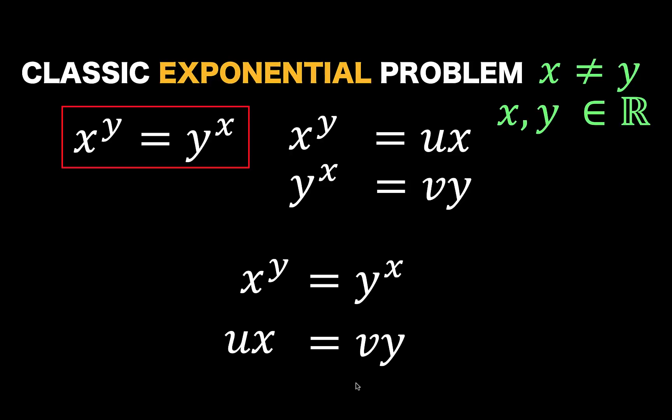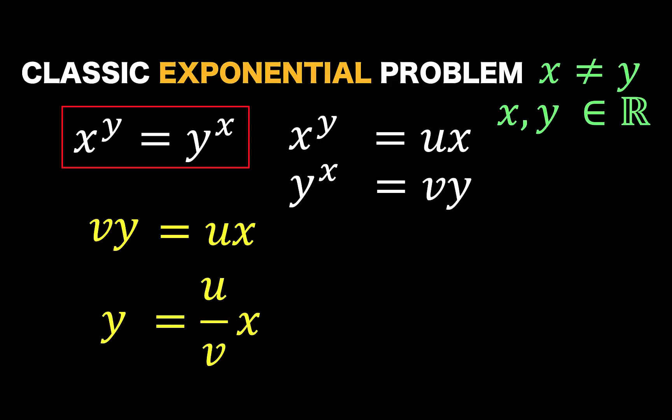Let's concentrate our attention to this last equation. By symmetric property of equality, let's interchange the left side and the right side, so we have y at the left side. And solving for y, we have y equals u over v times x.